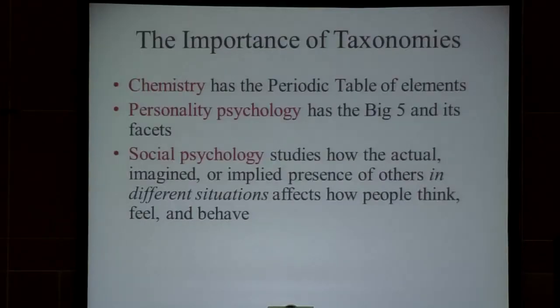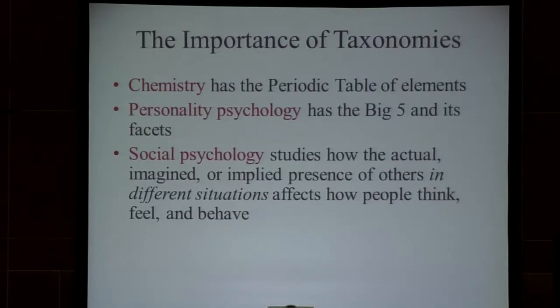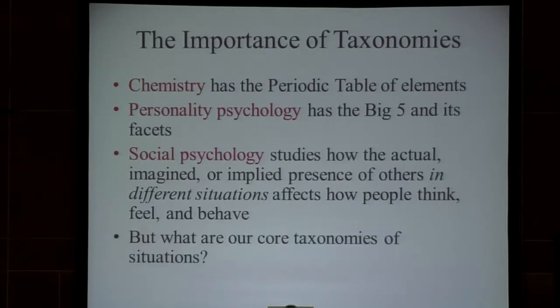Chemistry has the periodic table, and they've gone a long way with that in part because they know what the basic elements are, how they can be combined, and there's a finite number of things to study — not a humongous number of different kinds of elements. Even in personality, we have the Big Five — or six or three or four — and their facets. But the Big Five allows us to focus on a small number of things. We can bring in situations and look at person-by-situation interactions, as Mischel and Shoda and others have done. It's a tractable, manageable structure.